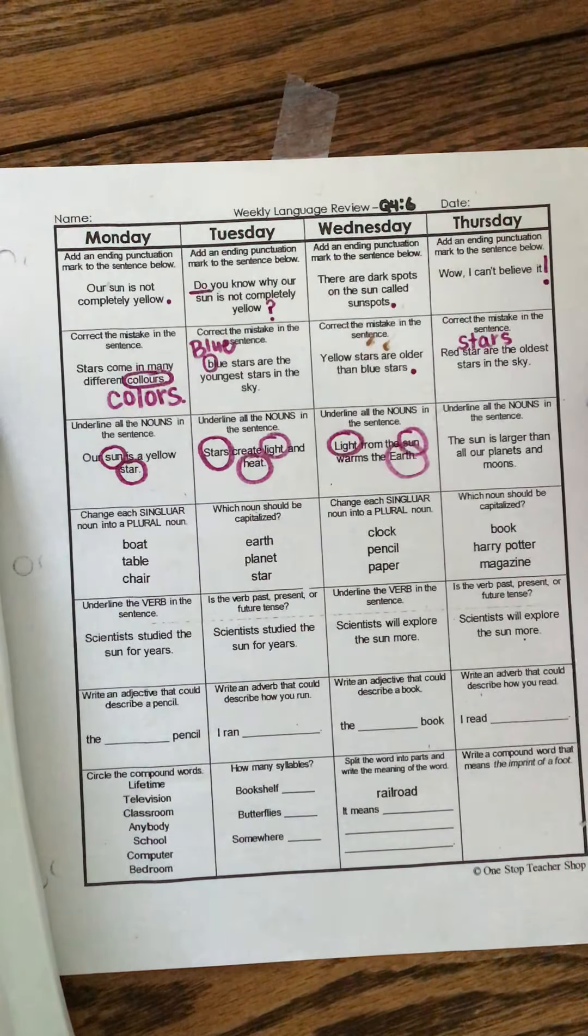Which noun should be capitalized? Earth, planet, star. We're looking for a specific noun. A proper noun. Did they say which planet right here. Planet Earth. Okay. So that's one. What about planet? Does it say which planet? No. Did it say which star? No. Okay.